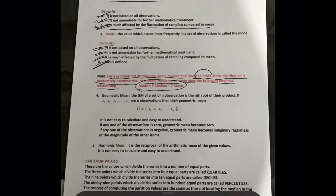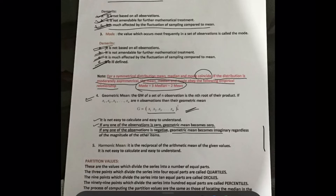If the distribution is moderately asymmetrical, the mean, median, and mode obey the following empirical relationship: Mode = 3 × Median − 2 × Mean. Geometric mean of a set of n observations is the nth root of their product. It is not easy to calculate and understand. If any one observation is zero, geometric mean becomes zero. If any one observation is negative, geometric mean becomes imaginary, regardless of the magnitude of other items. Harmonic mean is the reciprocal of the arithmetic mean of the reciprocals of the given values; it is also not easy to calculate and understand.